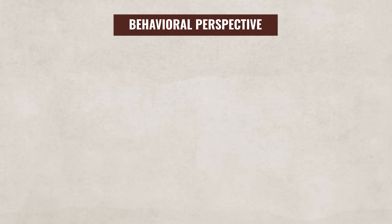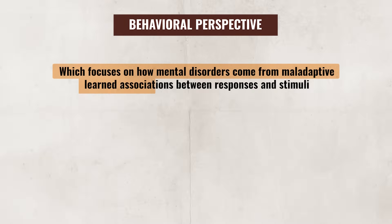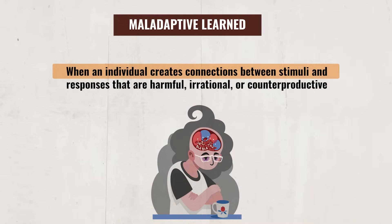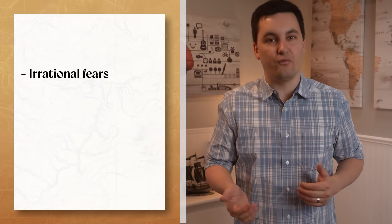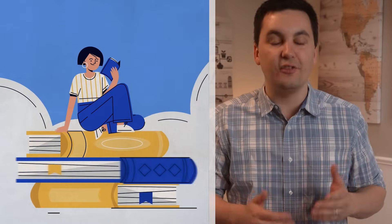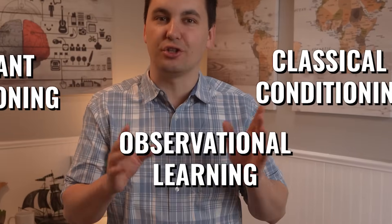Starting out, we have the behavioral perspective, which focuses on how mental disorders come from maladaptive learned associations between responses and stimuli. A maladaptive learned association occurs when an individual creates connections between stimuli and responses that are harmful, irrational, or counterproductive. These associations often shape a person's irrational fears, unhealthy habits, and self-defeating behaviors. Since they are often learned, they can be modified or replaced through different cognitive and behavioral interventions. Maladaptive learned associations are generally formed through classical conditioning, operant conditioning, or observational learning.